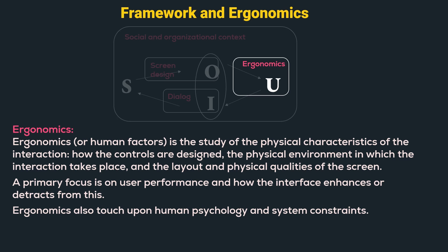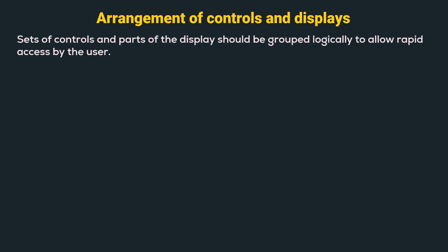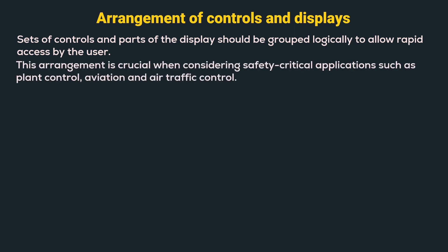Let us look at a few of the issues addressed by ergonomics. The first is the arrangement of controls and displays. Sets of controls and parts of the display should be grouped logically to allow rapid access by the user. This arrangement is crucial when considering safety-critical applications like plant control, aviation, and air traffic control.